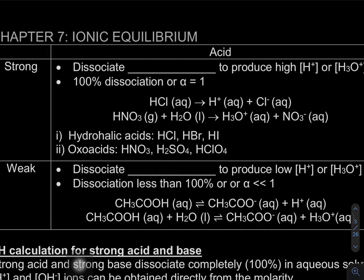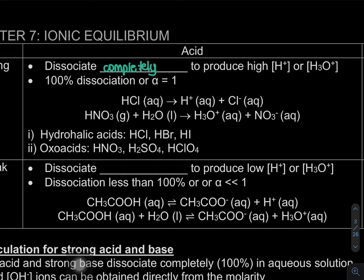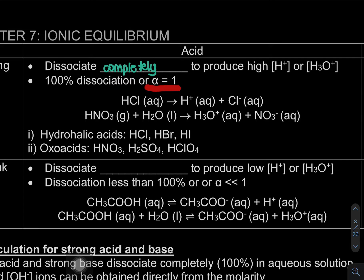A strong acid dissociates completely to produce a high concentration of H⁺ or H₃O⁺. Because it dissociates completely, its degree of dissociation is 1 (100%). For example, HCl dissociates into H⁺ and Cl⁻, and HNO₃ also dissociates fully and completely.